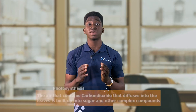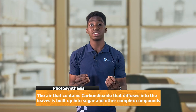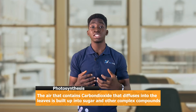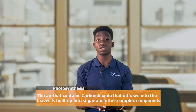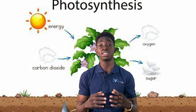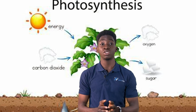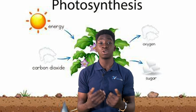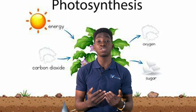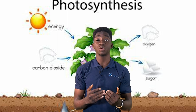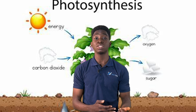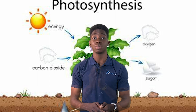In photosynthesis, air containing carbon dioxide diffuses into the leaves and is built up into sugar and other complex compounds — that's how plants make their food. When that plant is eaten by animals, sugar gets into the cells in the animal's body. That's how carbon cycles into other living organisms.